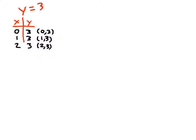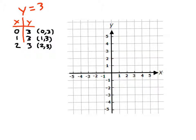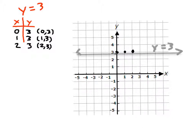I've moved and shrunk my work to make more room. For that first point, (0, 3). For the next point, (1, 3). And for the final point, when x is 2, y is 3. Then I draw the line through those points to show y equals 3. As you'll see, it's a horizontal line. Even when x would be negative 3, y would still equal 3.